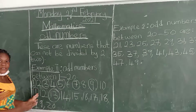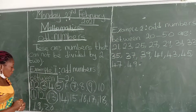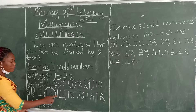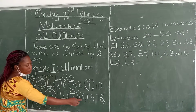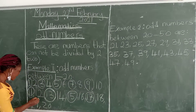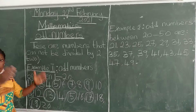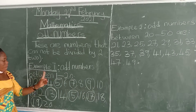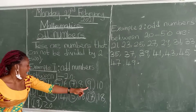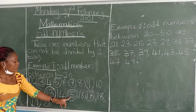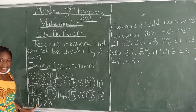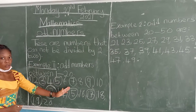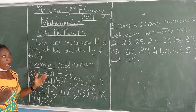Using the skipping method, we skip 11, 12, 13, 14, 15, 16, 17, 18, and 19. So examples of odd numbers between 1 and 20 are: 1, 3, 5, 7, 9, 11, 13, 15, 17, and 19.